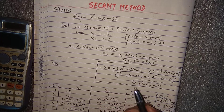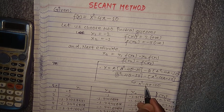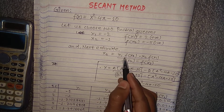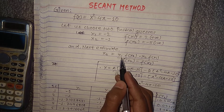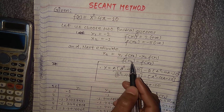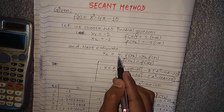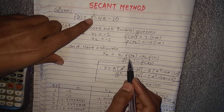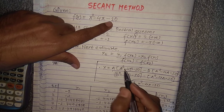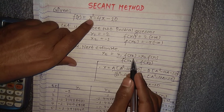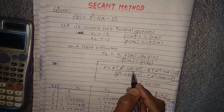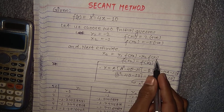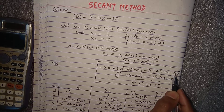To solve this with the help of a calculator, we put the equation in the calculator where x equals a represents x1, and b represents x2. So we write: a multiplied by f(x2), where f(x2) = b² - 4b - 10, minus b multiplied by f(x1), where f(x1) = a² - 4a - 10.